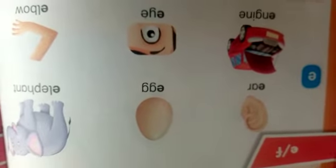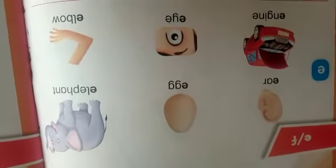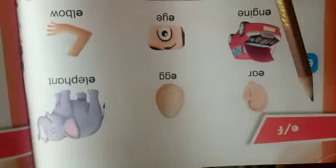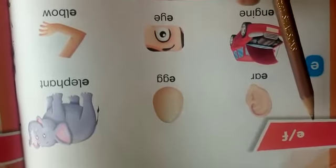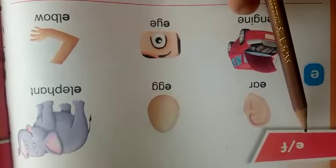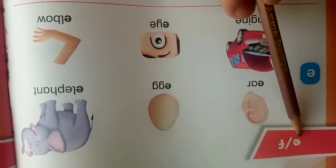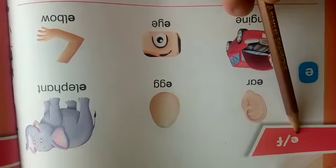We are going to learn a new letter, letter E. The name of the letter is E and the sound of the letter is A. The name of the letter is E and the sound of the letter is A.